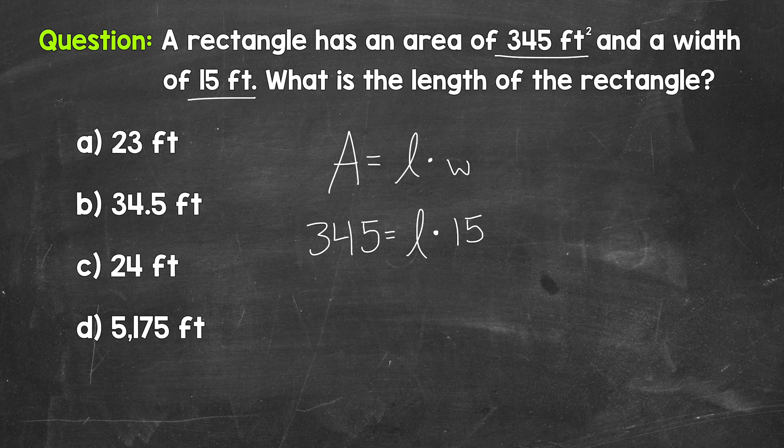And remember, when solving equations, we want to isolate the variable. Get the variable on one side of the equation by itself. That's the L here. L is being multiplied by 15. So we need the inverse operation, the opposite operation, in order to isolate L. What's the opposite of multiplication? Well, division. So we need to divide the right side of the equation by 15.